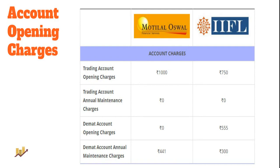In terms of annual maintenance charges, there is no charge for maintaining the trading account, but there is a yearly charge of 441 rupees for Motilal Oswal and 300 rupees for IIFL. So at the account opening level, IIFL is marginally more expensive than Motilal Oswal, while Motilal Oswal is marginally more expensive on AMC. There are ups and downs for both brokers, making the overall comparison quite interesting.